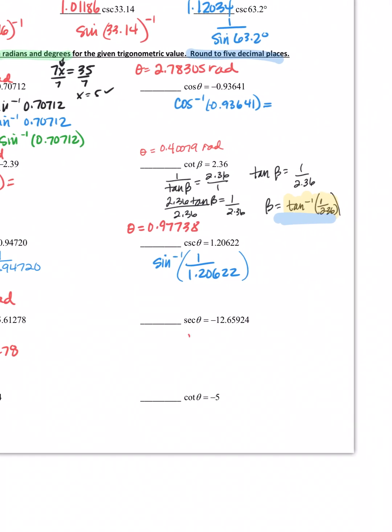Secant, well that's the inverse of cosine - 1 over negative 12.65924. Long decimals, right? When I do that, I get a radian measure of 1.64987 radians.